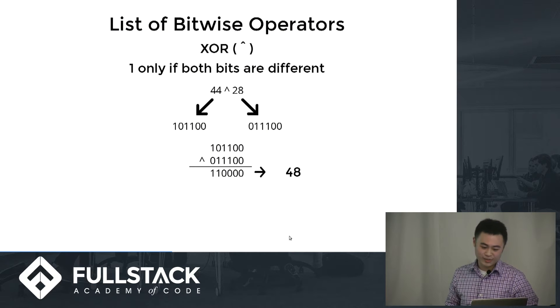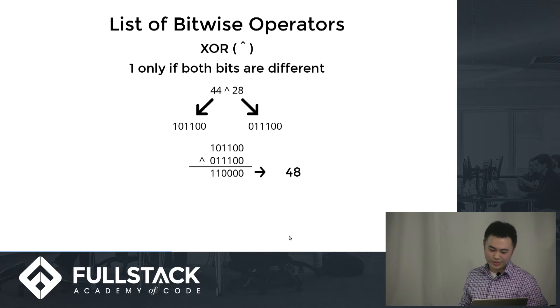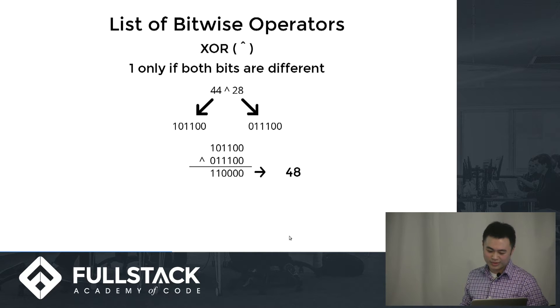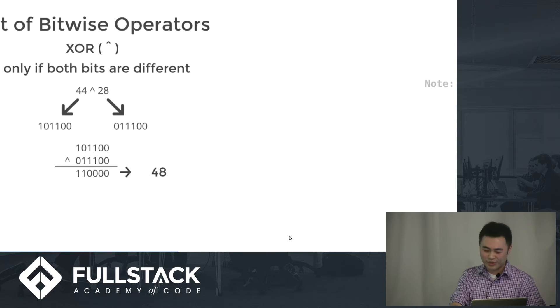XOR: 1 only if both bits are different. So 1011000 XOR 0111000 — it becomes 1100, which is 48.